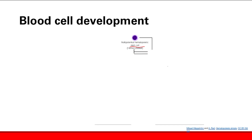When we say multipotent, that means they have potential to be multiple cells, different cells — so they have potential to become red blood cells, platelets, white blood cells, etc. Now these multipotent hematopoietic stem cells can divide either into common myeloid progenitors or common lymphoid progenitors.